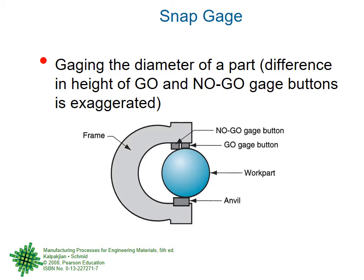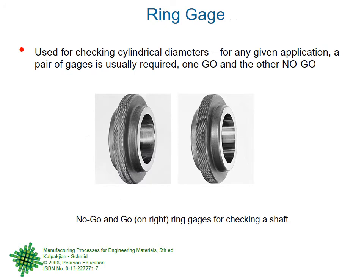Both go and no-go clips are on the same gauge. When you apply a small force, if the part is correctly made, it goes through the go side but does not go through the no-go side. A ring gauge is similar — there is a go ring and a no-go ring. If the measurement is 1 ± 0.1, one is made at 1.1 and the other at 0.9, and you try to pass your parts through each.